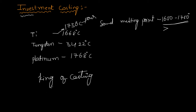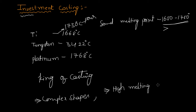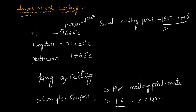There is no limitation except cost. We can cast complex shapes, we can cast high melting point materials, and the surface finish obtained is also very high — 1.6 to 3.2 micrometers. So investment casting has practically no limitation except cost, that's why it is called the king of casting.